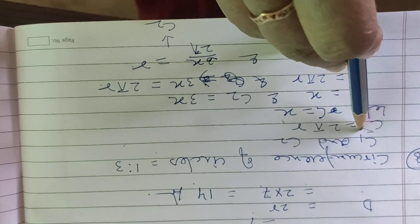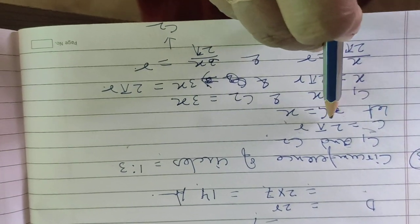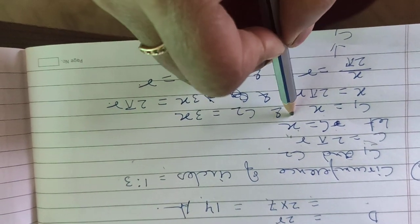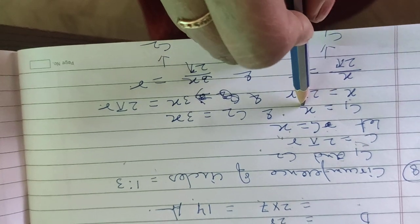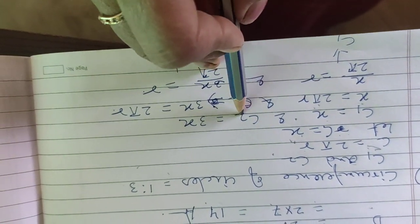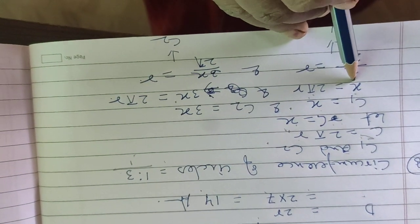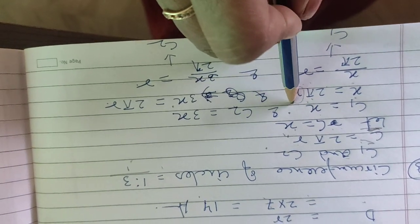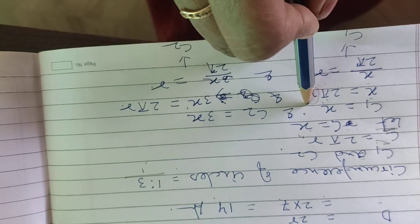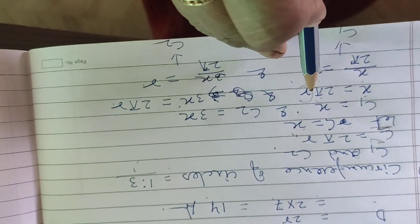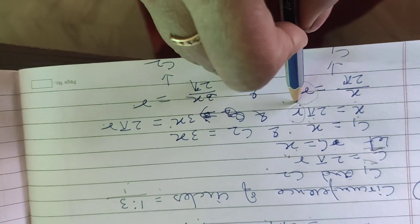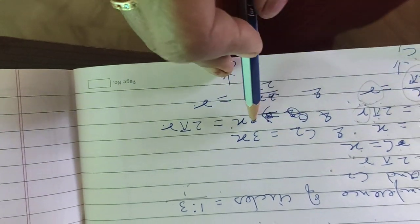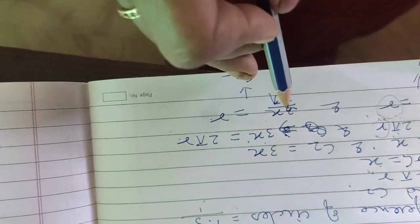Let C1 and C2 be the circumferences of circle 1 and circle 2. The circumference formula is 2πr. Let circumference C1 equal x, so circle 1 has circumference x and circle 2 has circumference 3x as given in the ratio. So x equals 2πr₁, giving r₁ equals x ÷ 2π. Similarly for C2: 3x equals 2πr₂, giving r₂ equals 3x ÷ 2π.